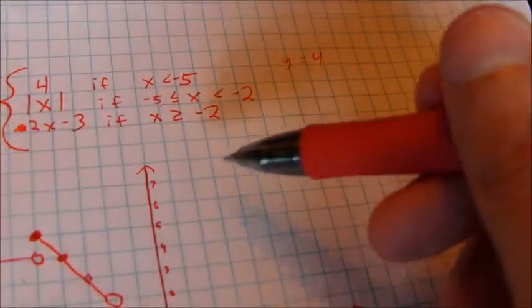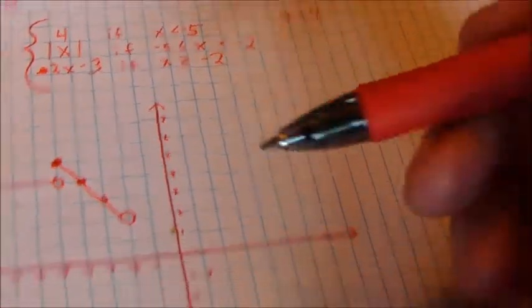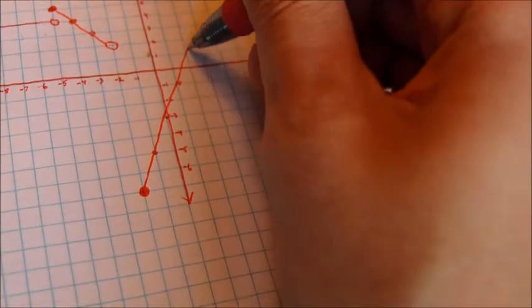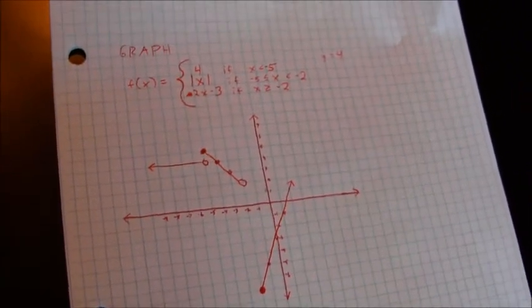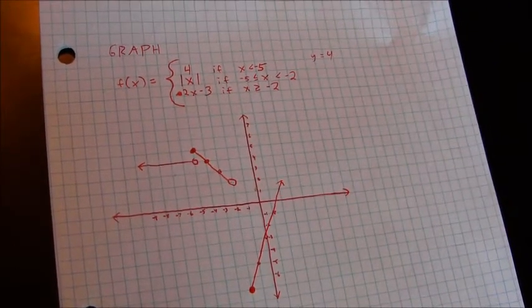And basically have a line that looks like this. Remember that it can equal an x value of negative 2. So I have a closed circle there, a filled in circle. And the graph is going to look something kind of like this. So there should be your answer at the end of the problem.